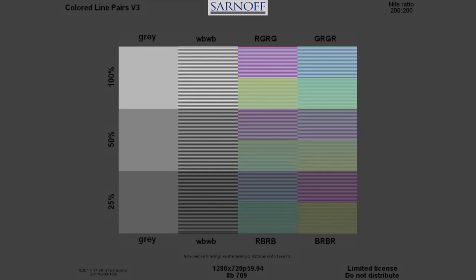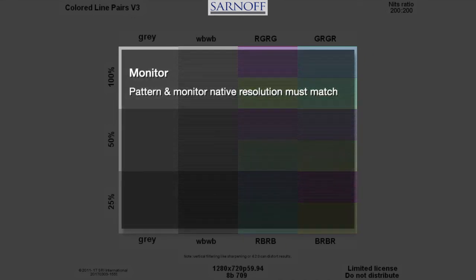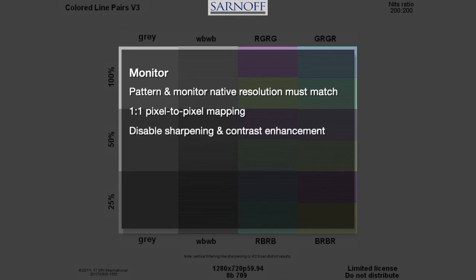Colored line pairs is a very sensitive pattern. It will not function as expected unless its resolution matches the monitor's native resolution and the monitor is set for one-to-one pixel-to-pixel mapping. Enhancements such as sharpening and contrast enhancement should be disabled. Set the brightness carefully and set the gamma to match the pattern's gamma or EOTF.